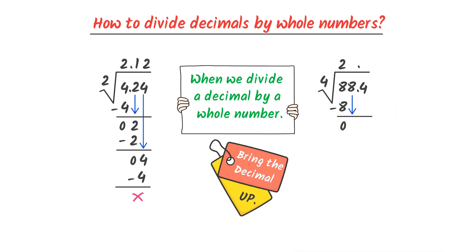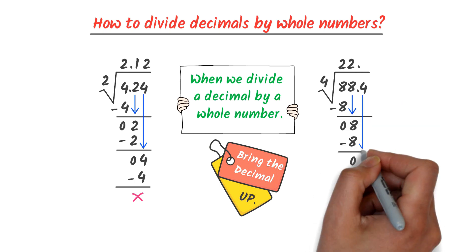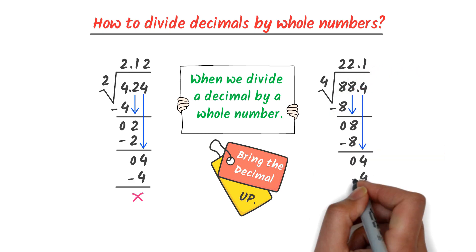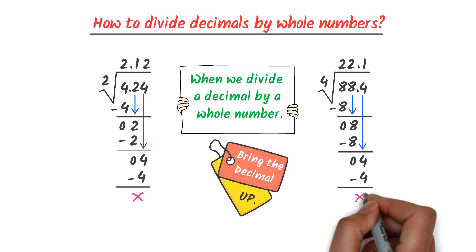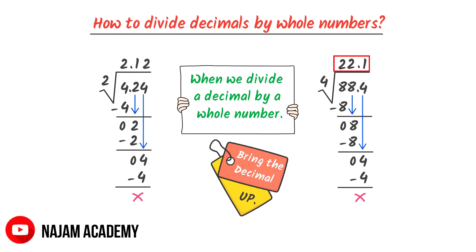Then I bring down this 8 here. We know that 4 times 2 is equal to 8, thus 8 minus 8 is equal to 0. I bring down this 4 here. We know that 4 times 1 is equal to 4, thus 4 minus 4 is equal to 0. Therefore, when we divide 88.4 by 4, we get 22.1. So the answer is 22.1.